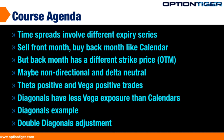For iron condors, calendars and backspreads we are going to put trades on, but for diagonals, double diagonals, butterflies and ratio spreads we are going to understand the theory. You are going to know exactly what these strategies are, but we are just not going to put trades on them.